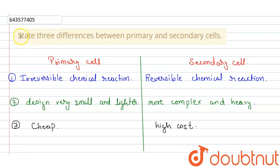So here the question is: state three differences between primary and secondary cells. Here's the column for primary cells and here is the column for secondary cell.